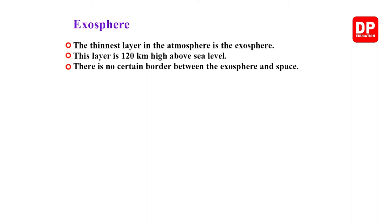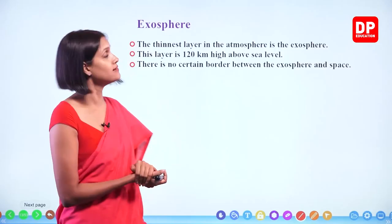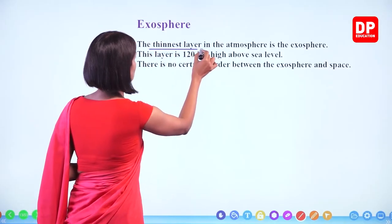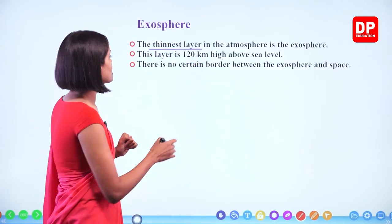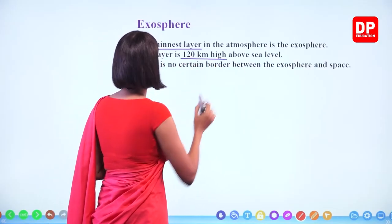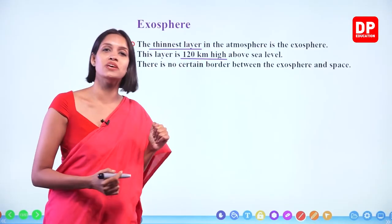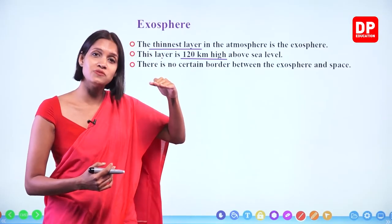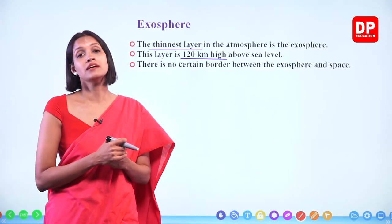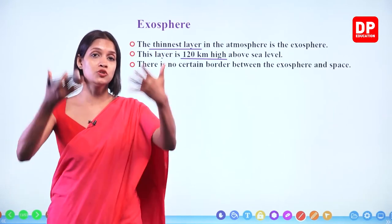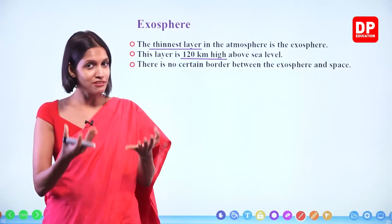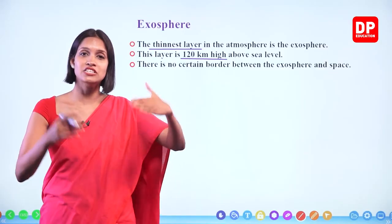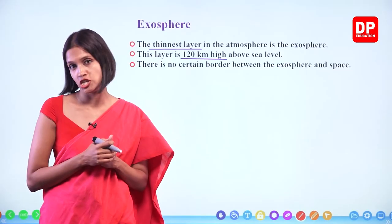The fifth and outermost layer of the atmosphere is the exosphere — the closest to space. This is the thinnest layer in the atmosphere. It is 120 kilometers high above sea level. There is no certain border between the exosphere and space — you cannot exactly say where the atmosphere ends; it just thins out towards space. When going from the troposphere to the exosphere, the amount of air particles reduces until there is very little air present.